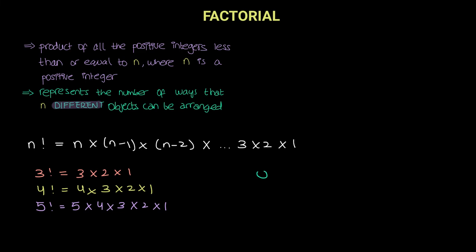However, the real question is: what is the answer to zero factorial? Many of you would think that the answer to zero factorial is simply zero. This is incorrect. Think of it this way — zero factorial means you are arranging zero objects, which basically means there is nothing that you have that needs to be rearranged. There is only one way of arranging nothing. And therefore, the answer to zero factorial is simply one.